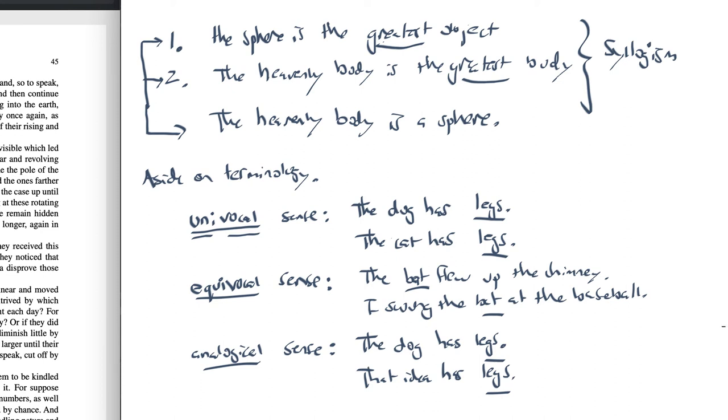Now, why am I doing this digression on terminology? Well, in this argument here for the sphericity of the heavens, one could argue that Ptolemy, and Aristotle for that matter, is using the word greatest in an equivocal sense. After all, the sphere is the greatest object. Perhaps they mean something like, it is the most important object. And they say the heavenly body is the greatest body. Perhaps they mean the largest body. So they mean something very different by greatest in those two sentences. So if that's the case, then they're equivocating. They're trying to use a similar word, but it means something very different. So the conclusion that the heavenly body must be a sphere doesn't follow from these two premises.